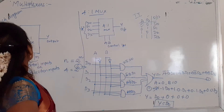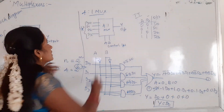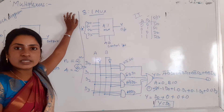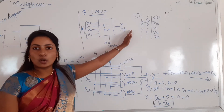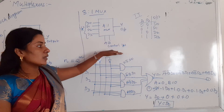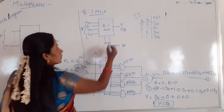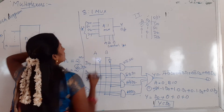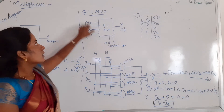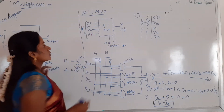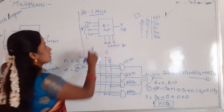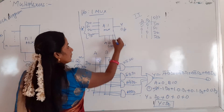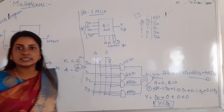This is the 4-to-1 multiplexer. For an 8-to-1 multiplexer, there are 8 inputs, one output, and 3 control inputs A, B, C with data inputs D0 to D7. For a 16-to-1 multiplexer, data inputs are D0 to D15 and control inputs are A, B, C, D.